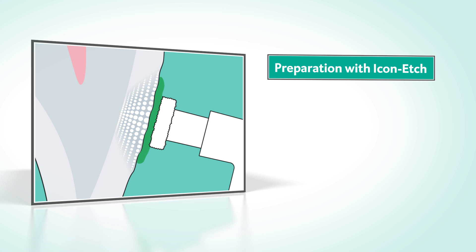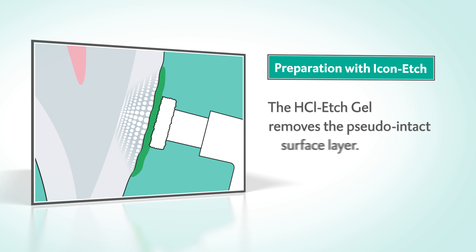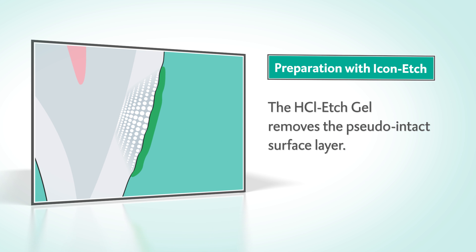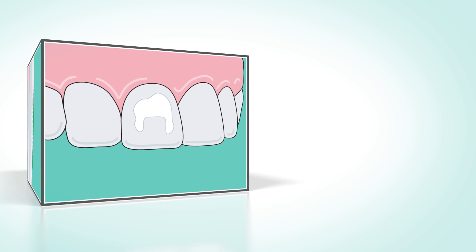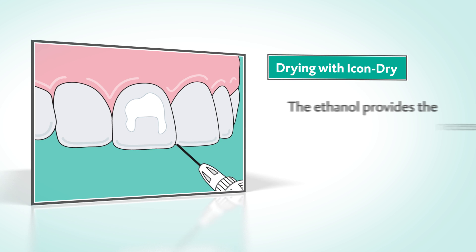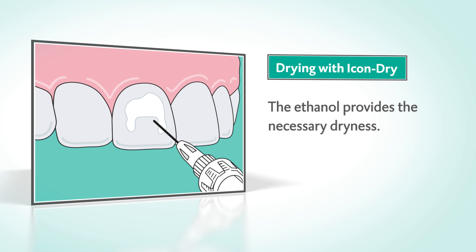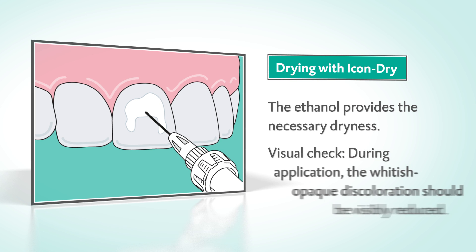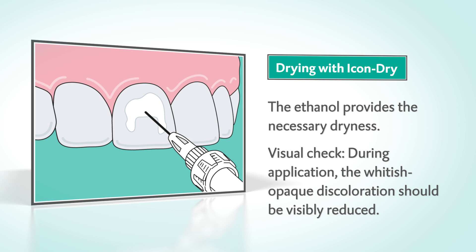Application is simple. First, the tooth is prepared with Icon Etch. Then the area is carefully dried with air and ethanol using Icon Dry.